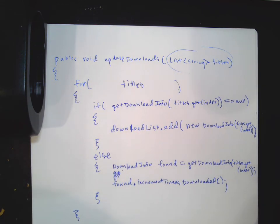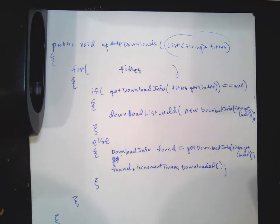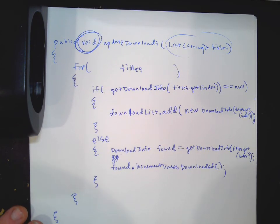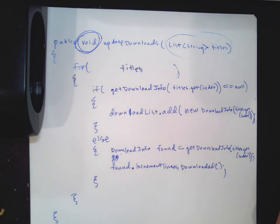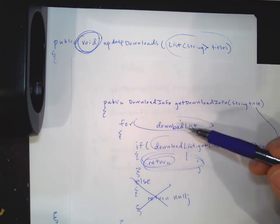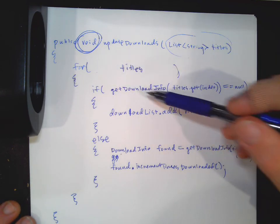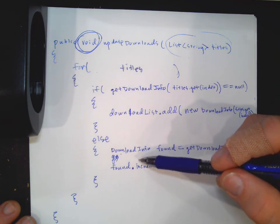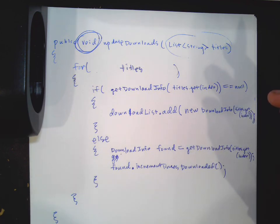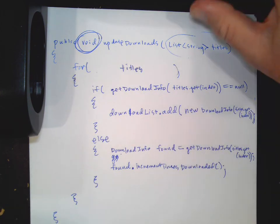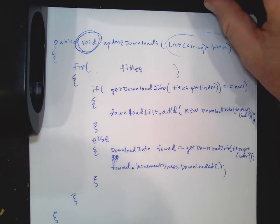We don't need to return anything - this method updates the private instance variable downloadList directly. So Part A came down to about four lines of code, and Part B about five lines - nine total including else statements. I hope this helps, and I hope you tried it really hard first. Hopefully you're more ready for problems like this in the future.